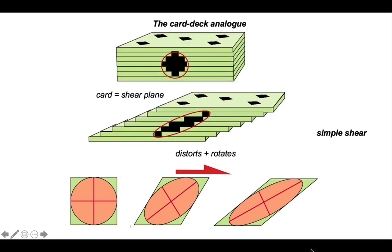You can create this effect in a card deck by drawing a circle on the side of the cards and then shearing the cards over as shown and the circular shape you've drawn becomes elliptical.